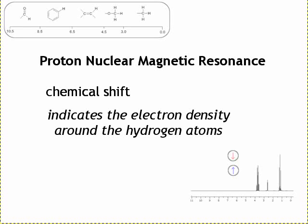Welcome to this tutorial on proton NMR. This is going to be about chemical shift and the regions of the spectrum. The position of a peak within a spectrum is called the chemical shift and indicates the electron density around the hydrogen atoms.